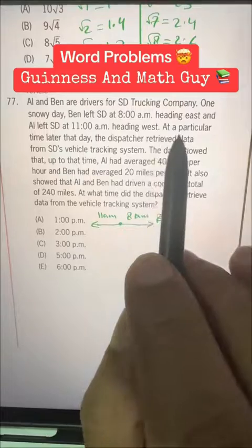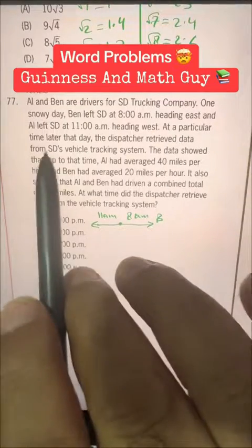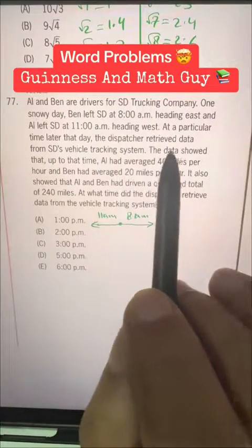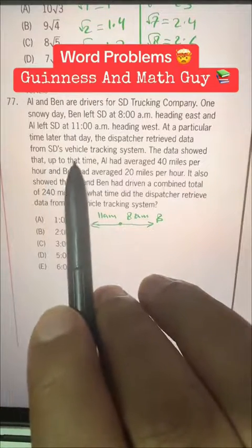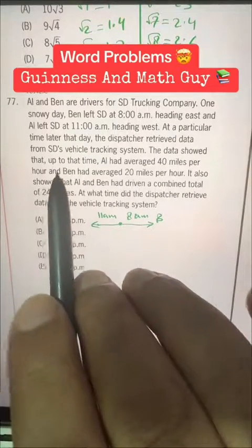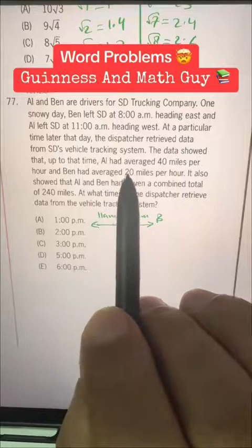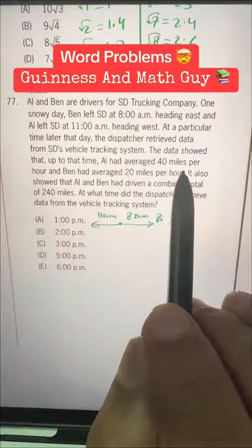Now at a particular time later that day, the dispatcher retrieved data from SD's vehicle tracking system. The data showed that up to that time Al had averaged 40 miles per hour.